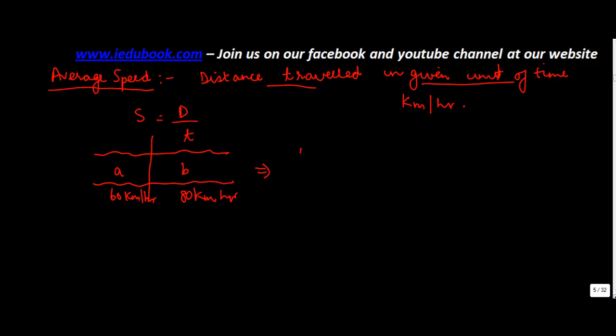Now if someone were to tell you can you find out what is the average speed at which the object is moving. The average speed basically is given by the total distance travelled upon total time to travel.